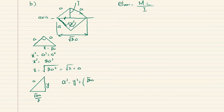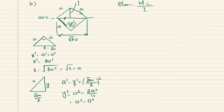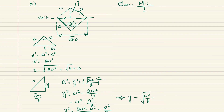To find the height y (which is c, the distance from axis to apex), using the right-angle triangle: a² = y² + (√2·a / 2)². So y² = a² − (2a²/4) = a² − a²/2 = a²/2. Therefore y = a / √2. This height c from the neutral axis to the top vertex equals a over √2.